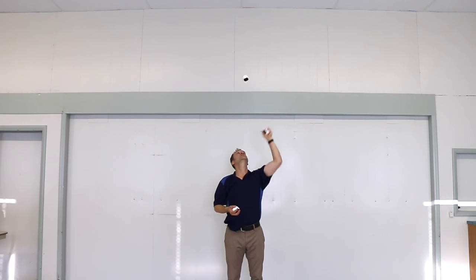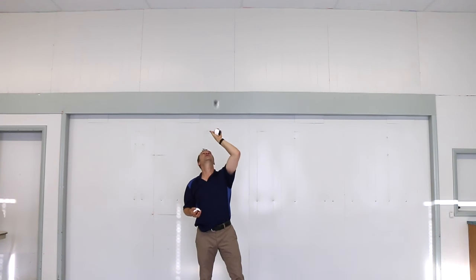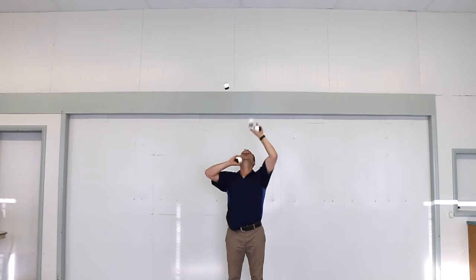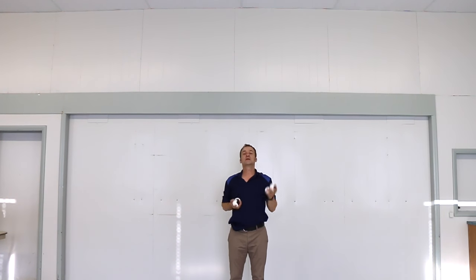1-2-3-4-5. Other hand. 1-2-3-4-5. Put them together. 1-2-3-4-5-6-7-8. And then practice getting into and out of it from a cascade.